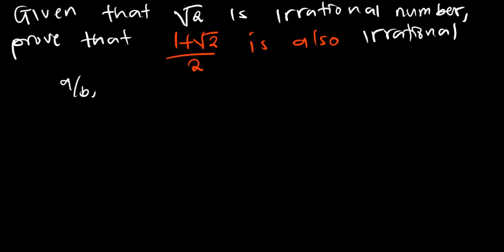And A and B are integers but they have got no common factors. So we are going to assume now that what we have been given is rational, but we know that we want to prove that it is irrational.